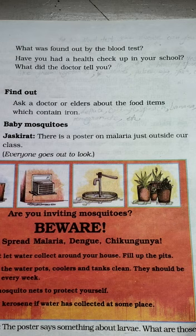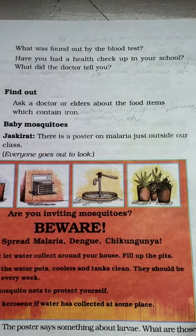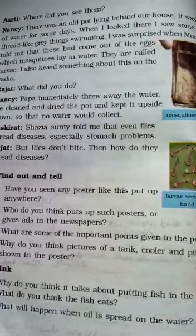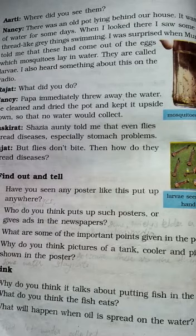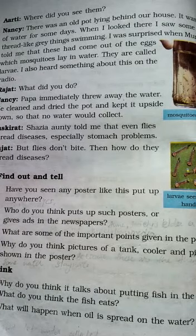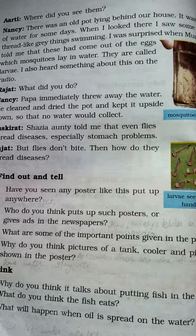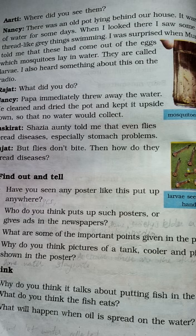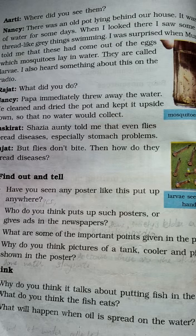Ratchet asked, 'The poster says something about larvae — what are those?' Nancy replied, 'They are the baby mosquitoes. They don't look like mosquitoes at all. In your textbook you can see mosquito larvae collected in a bottle — that is mosquito larvae.' Nancy said an old boat was lying in their house, full of water for some days, and she saw some tiny thread-like creatures swimming. She was surprised when her mother told her these had come out of eggs which mosquitoes lay in water — they are called larvae.